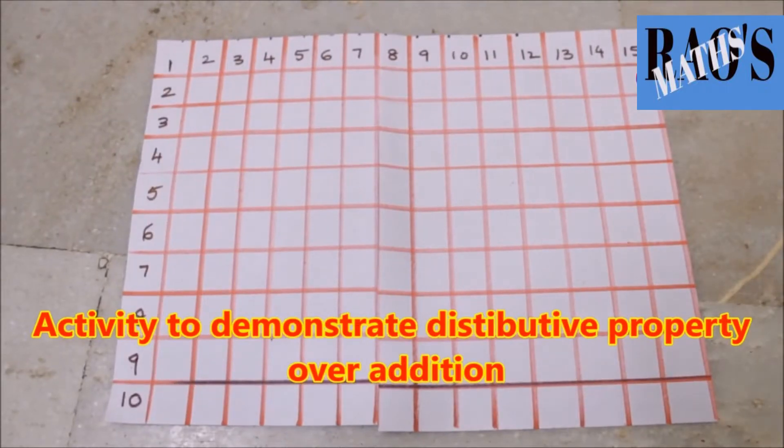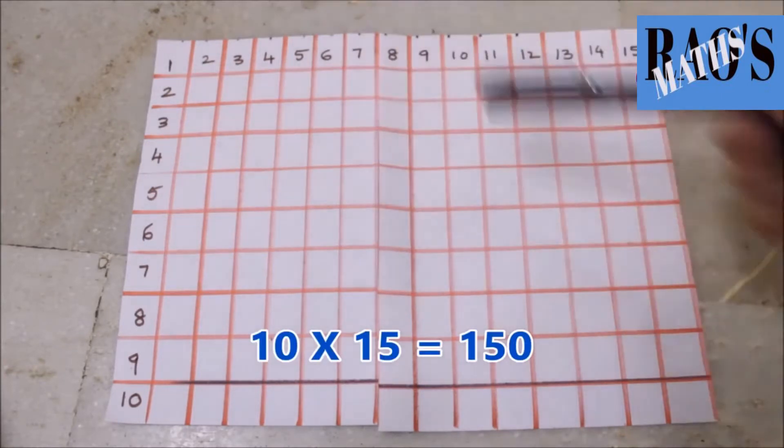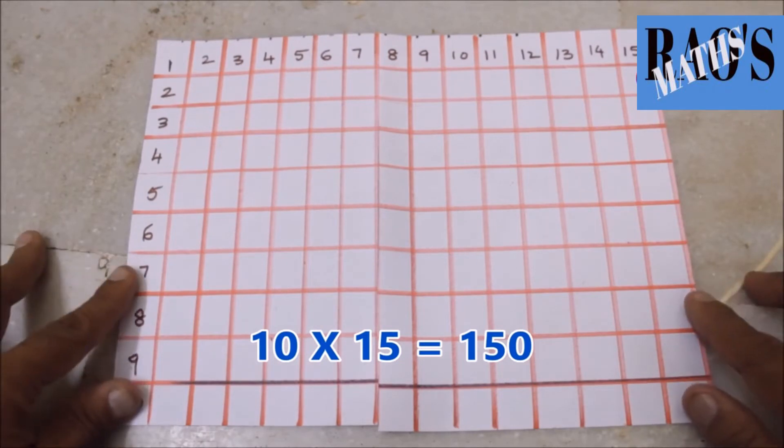Here is an activity to demonstrate the distributive property over addition. Here I have a grid of 10 by 15, so we have 150 squares in the paper. 150 squares, that is 10 into 15.